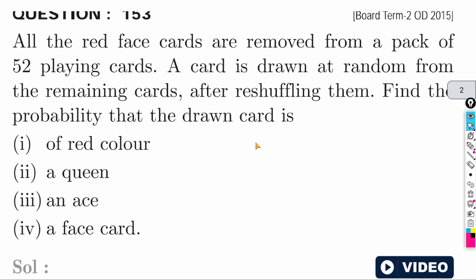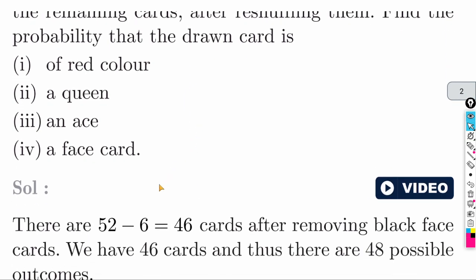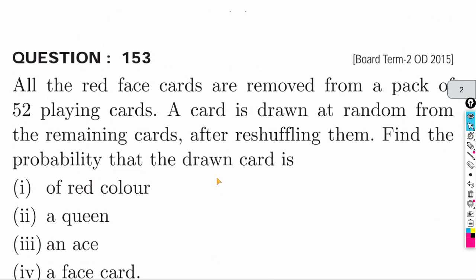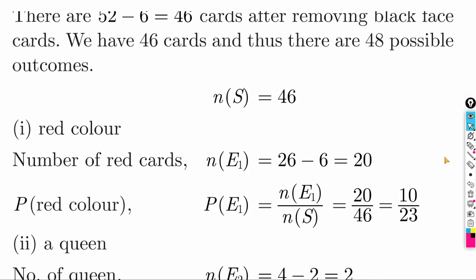Next question: all the red face cards are removed from a pack of 52 cards. There are 12 face cards total — 6 black and 6 red. Remove 6 red face cards: 52 - 6 = 46 remaining cards. Total red cards = 26; remove 6 red face cards → 20 red cards remain. Probability of red card = 20 by 46, which simplifies to 10 by 23.